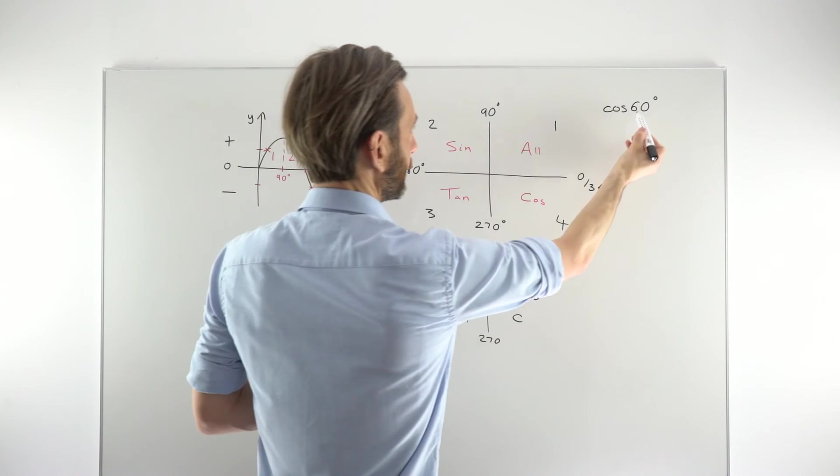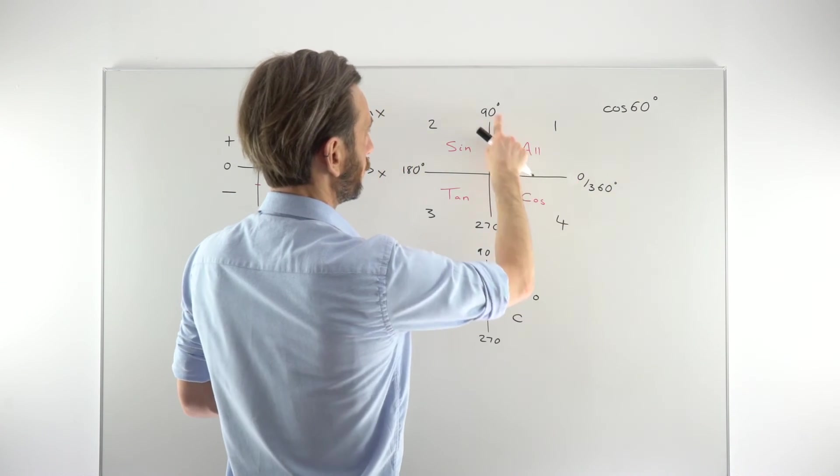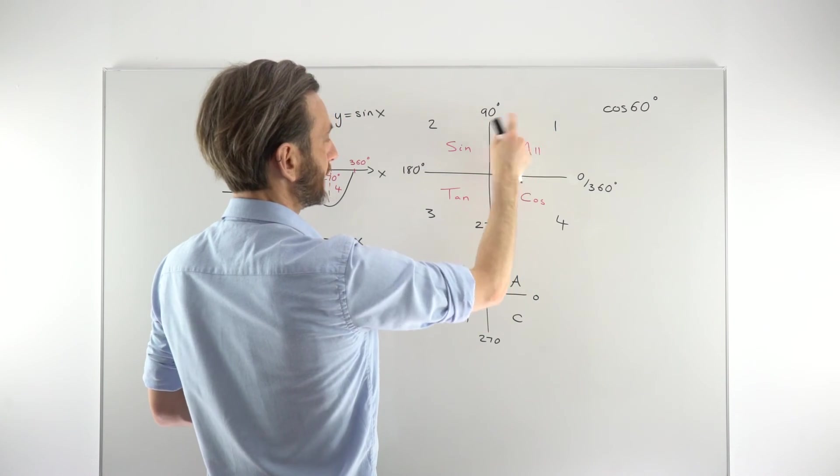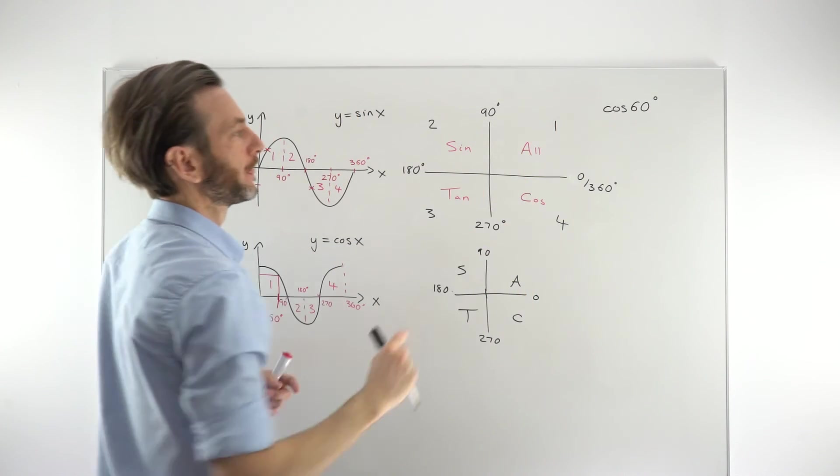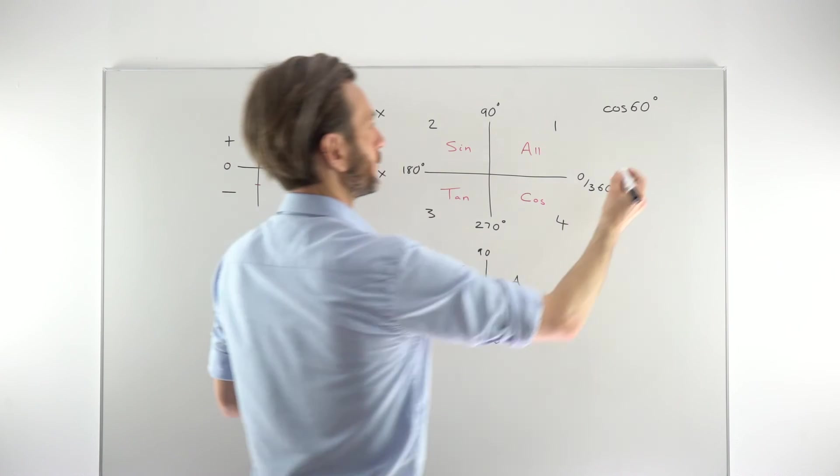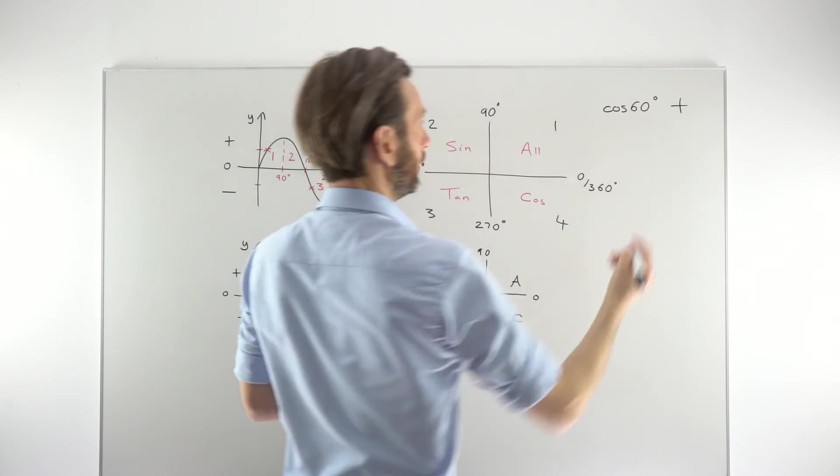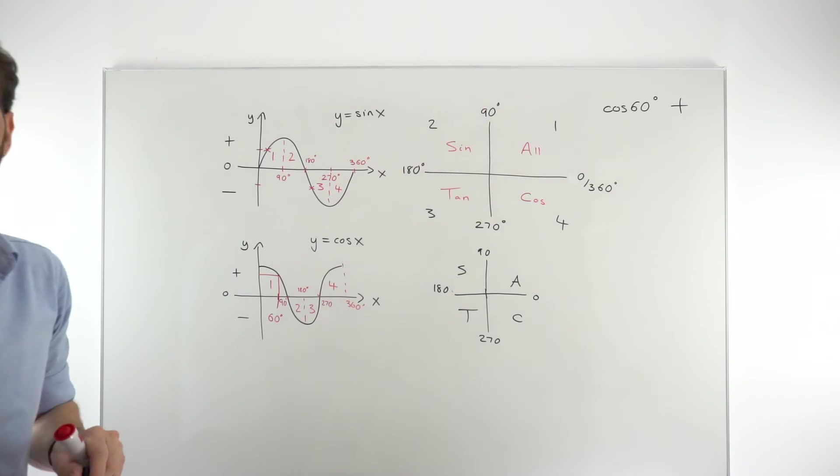I can clearly see that off of the cosine graph. If I turn to the CAST diagram, I would say, well, 60 degrees is between 0 and 1. So that's 0 and 90. So that's in quadrant 1, which is the all quadrant where all 3 are positive. So that says that cosine has to be a positive value in that area.